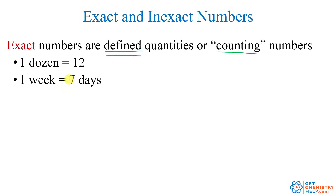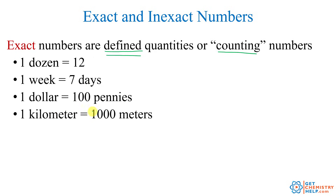One week is exactly seven days. One dollar is exactly 100 pennies. One kilometer is exactly 1,000 meters. These are all things that have been defined. One hour is exactly 60 minutes. One minute is 60 seconds. One foot is exactly 12 inches. These have all been defined, so they're exact — there's no estimating, no approximating.